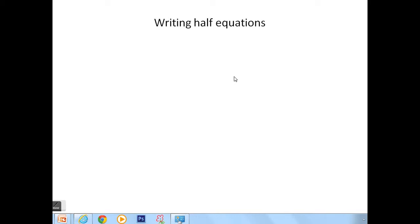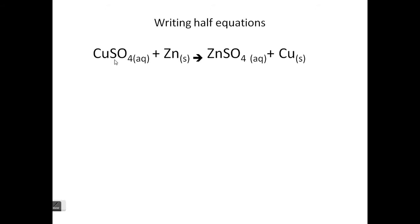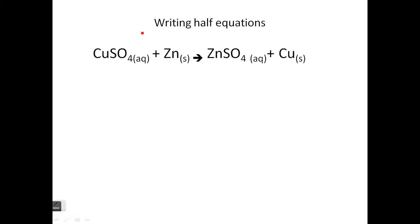Now we're going to write some half equations. Earlier in the previous video, we looked at this reaction here. We're going to write half equations for this reaction. Just to remind you, the oxidation number of the copper is plus 2, the oxidation number of the zinc is 0. On the right side, the zinc is plus 2 and the copper is 0.